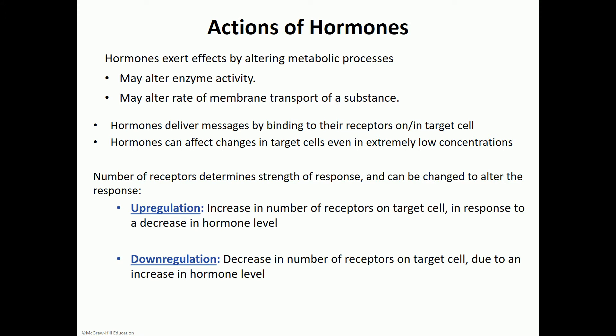Now let's take a look at the actions of hormones — what happens to the target cells when they are stimulated by hormones. Hormones change the metabolic processes of their target cells either by changing the activity of enzymes — stimulating or inhibiting enzyme activity — or they can change the rate of membrane transport of a substance, such as opening sodium channel gates or increasing the uptake of glucose through a transporter into the cell, like what insulin does.